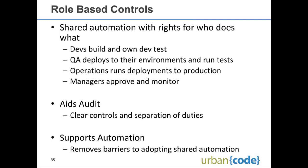We absolutely need role-based controls — we need to know who can build, who can deploy, who can invoke tests, who can approve things, and how that varies on a per-environment basis. This is so obvious to a lot of organizations that some say 'we can't have automation because we don't know how the role-based controls are going to work, so we're just not going to do automation.' But this is an unfair boundary. You can put role-based controls around your automation, and if you don't see how, you're probably using the wrong tool. Role-based controls should support and enable your automation, not be a boundary or hindrance.